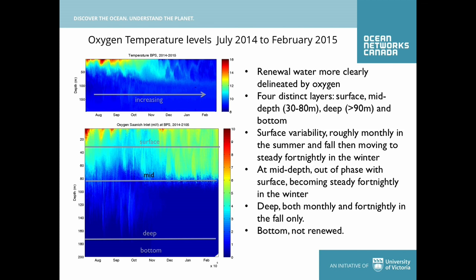I've broken the data up into four distinct depth zones: a surface zone down to about 30 meters, a mid-depth region, a deep region, and a very bottom region. At the surface we see both monthly and fortnightly pulses at the end of summer, then a cessation of events, followed by a steady fortnightly signal during winter. Mid-depth shows similar pulses that are out of phase with the surface during winter months. In the deep zone there's some general input of newer water during the fall period, and the bottom stays the same throughout this sample period.